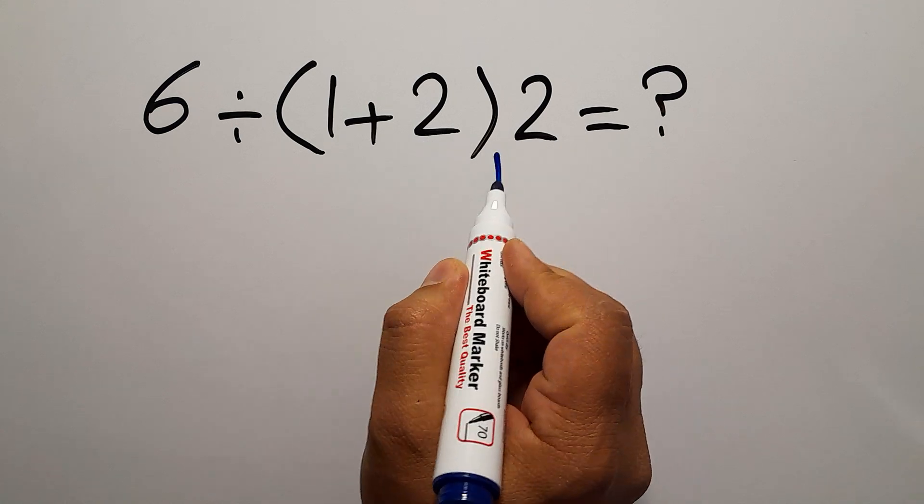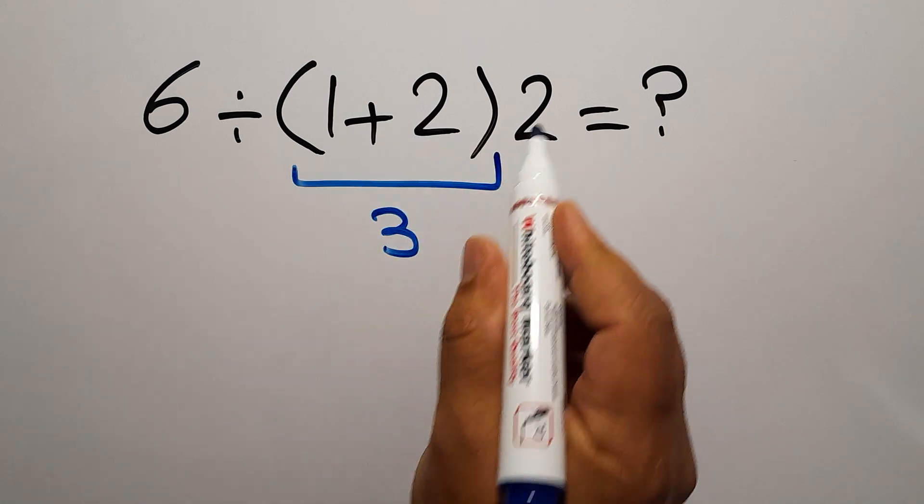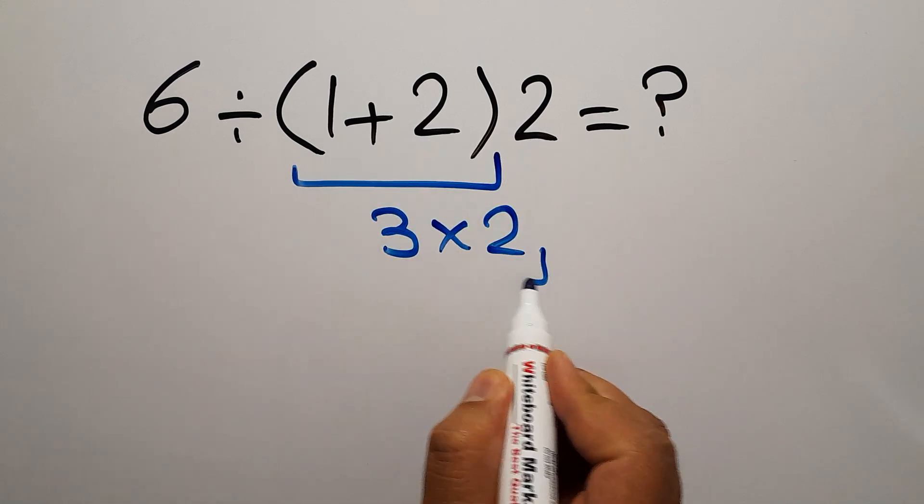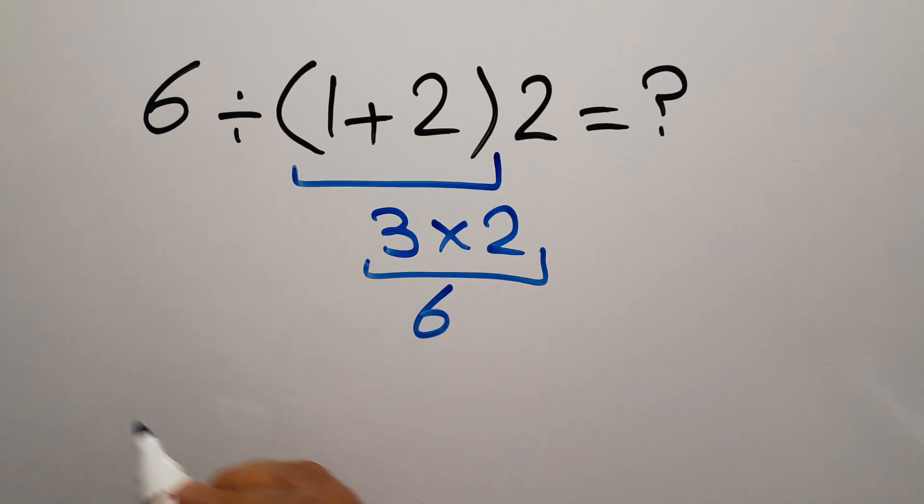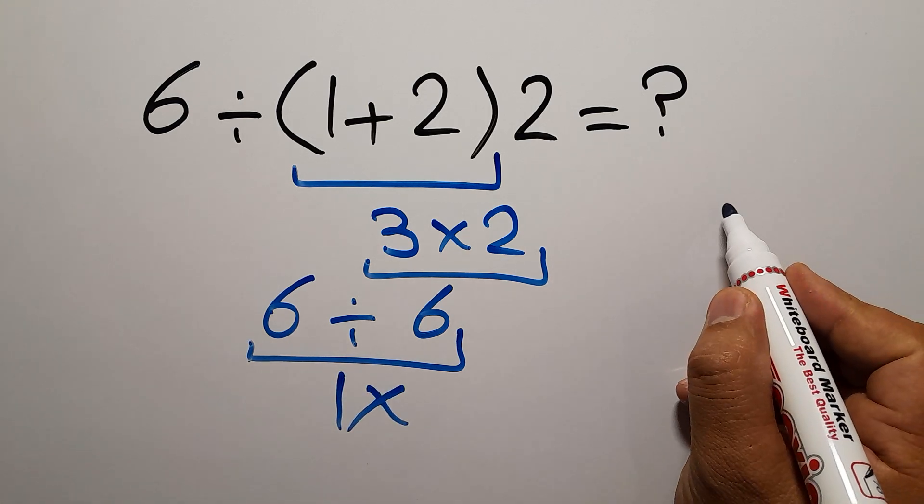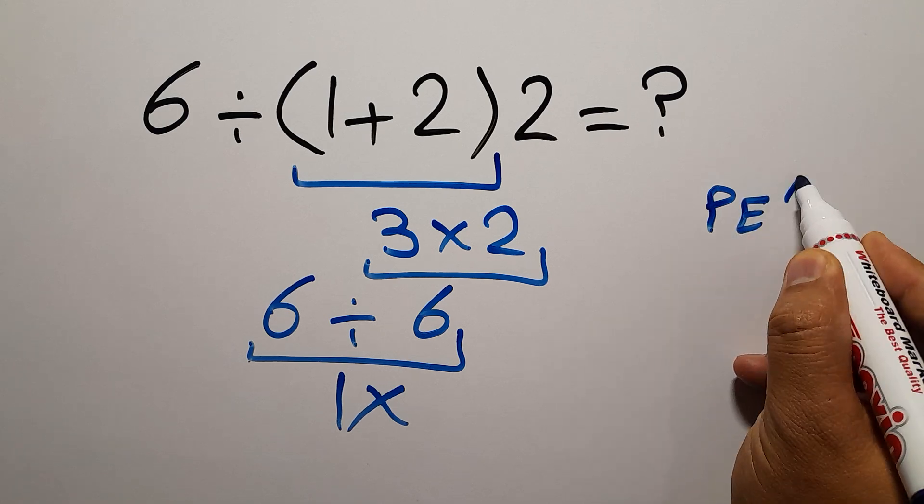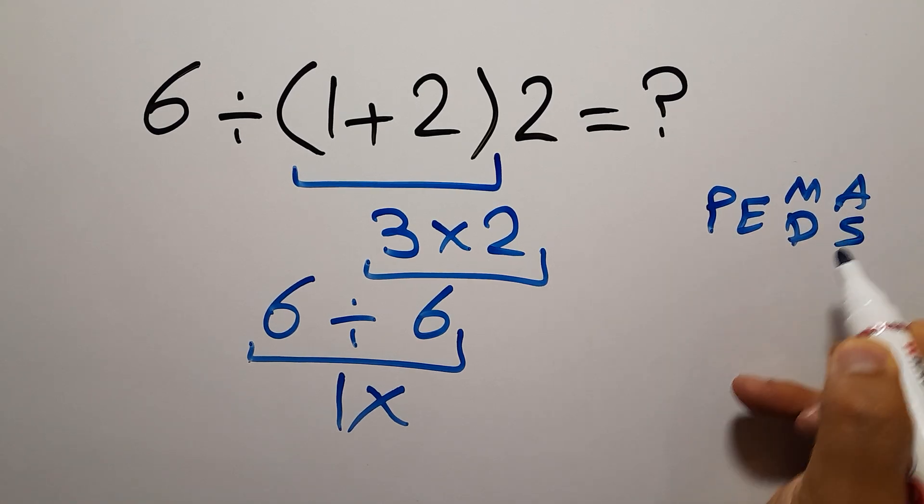1 plus 2 gives us 3, so 3 times 2 which equals 6, and we have 6 divided by this which equals 1. But this answer is not correct because according to the order of operations, which is PEMDAS...